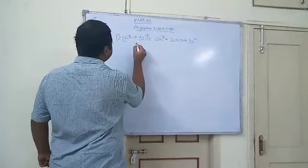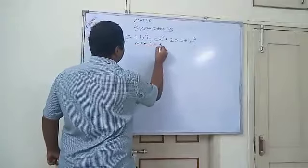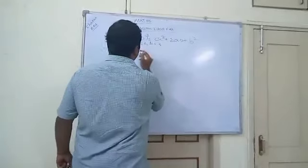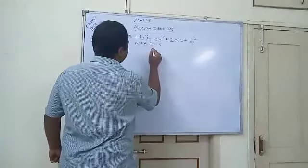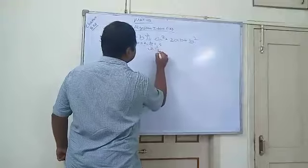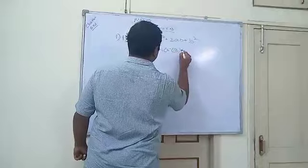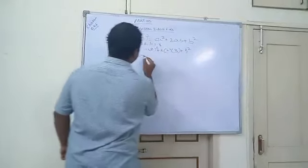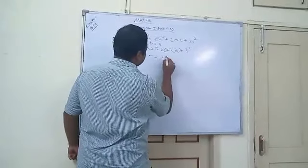So let us take A is equal to 2, B is equal to 3. We can write them. Then what will happen? 2 square plus 2, 2 into 2 plus 3 plus 3 square. Means 4 plus 4 into 3, 12 plus 9.